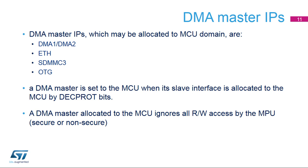DMA master IPs which may be allocated to the MCU domain are DMA-1, DMA-2, ETH, SDMMC-3, and OTG. A DMA master is set to the MCU when its slave interface is allocated to the MCU by DECPROT bits. A DMA master allocated to the MCU ignores all read-write access by the MPU, secure or non-secure.